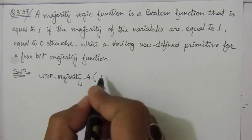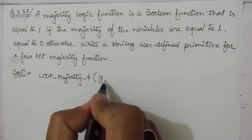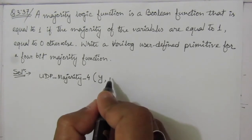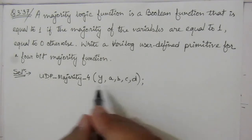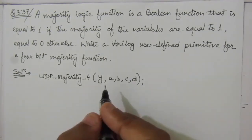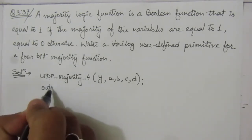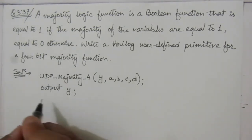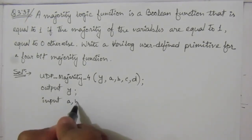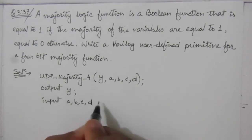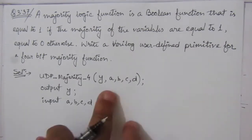Then within the brackets we write the inputs and outputs. Y is the output, and the inputs are A, B, C, D. These are the declarations of the inputs and outputs. We then define which are outputs and which are inputs: output Y; input A, B, C, D; — each line terminated with a semicolon.